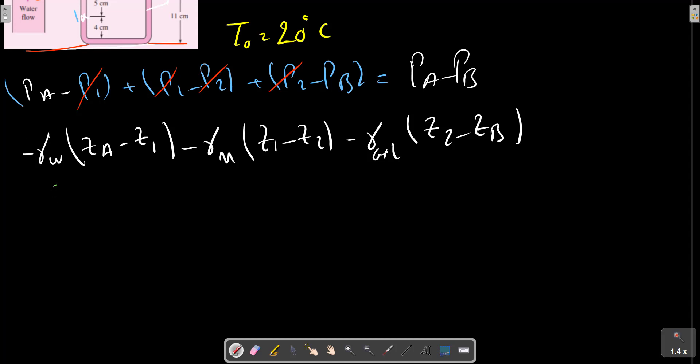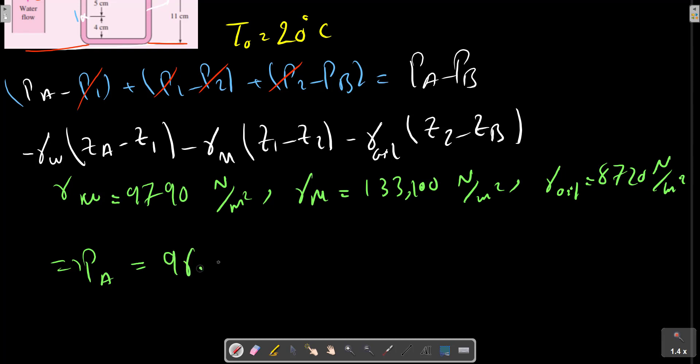Gamma water, let me write here, gamma mercury, and gamma oil. From the tables, so we can calculate PA equals to 96.4 kilopascal.